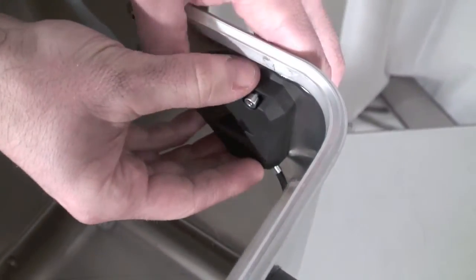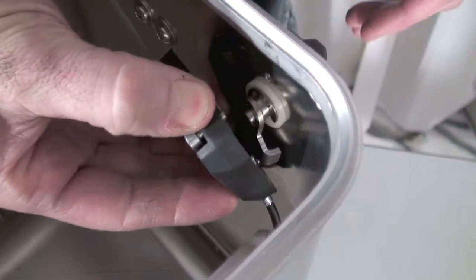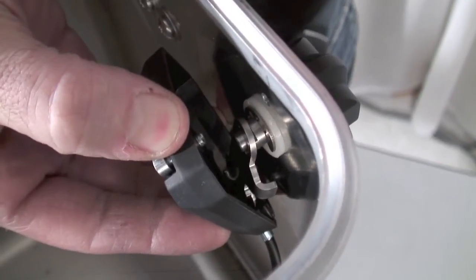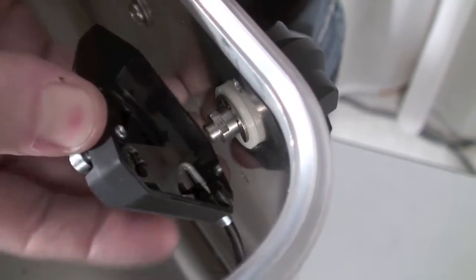Once the screws are loosened you can remove the housing, and you'll also need to make sure that the metal plate on the axle also flips off. You can then simply drop this into the pannier.